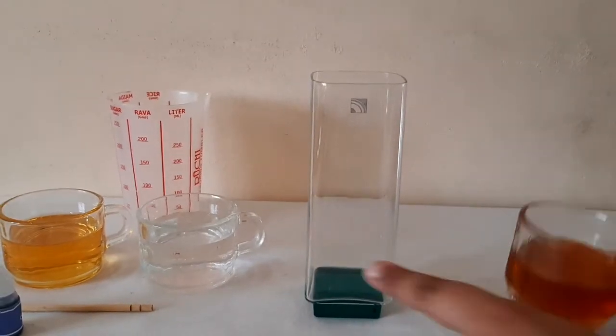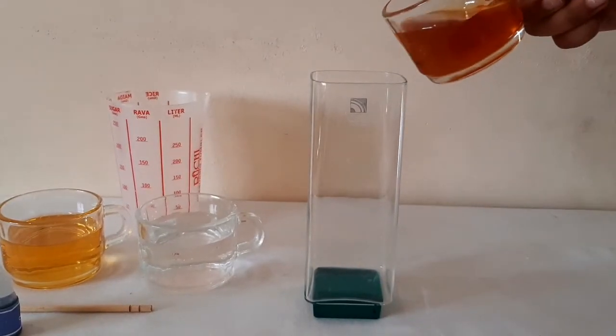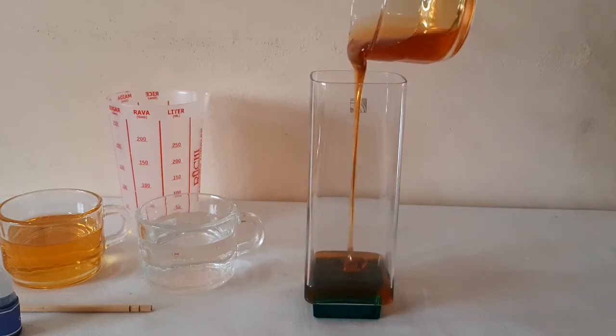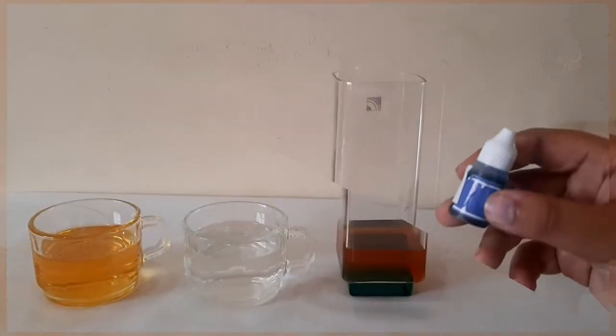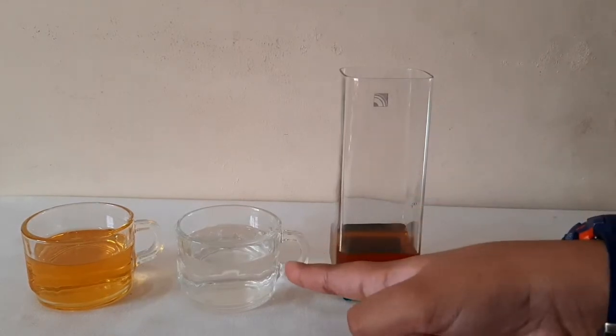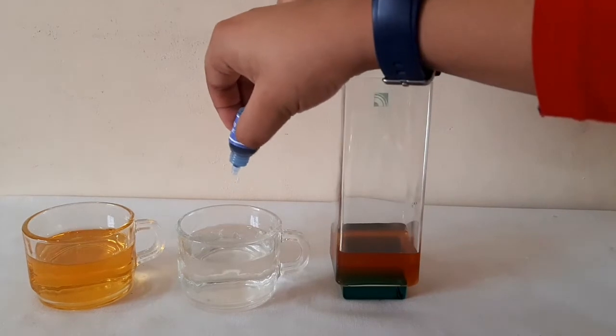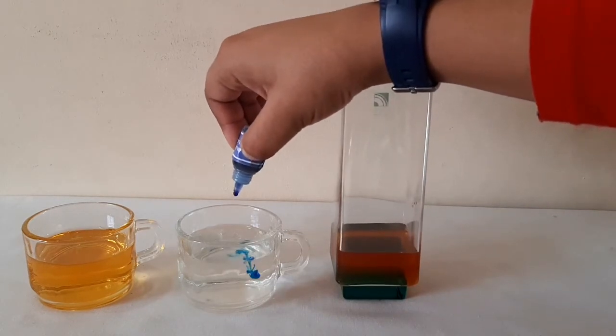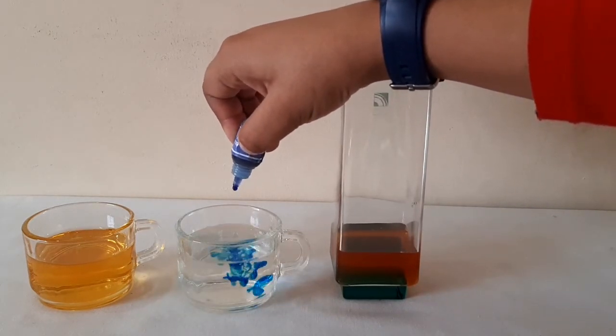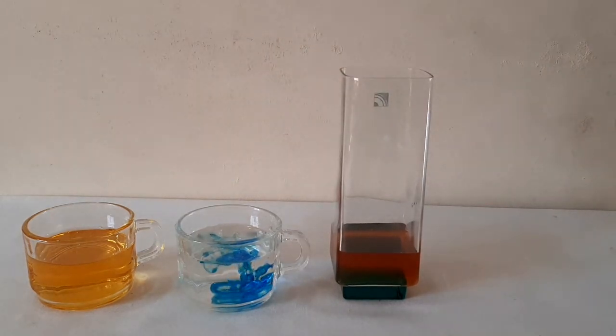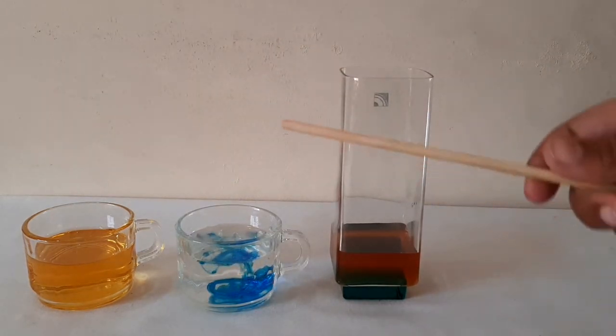So first take the 50 ml of honey and pour it into the glass. Next take your food coloring and add it into the water. Next take the stirrer and mix it.